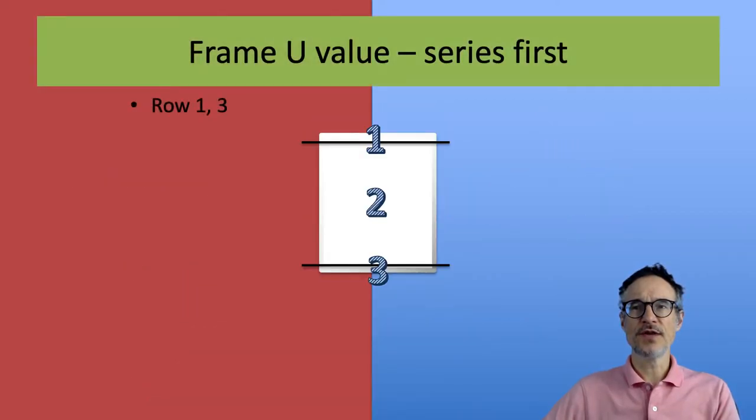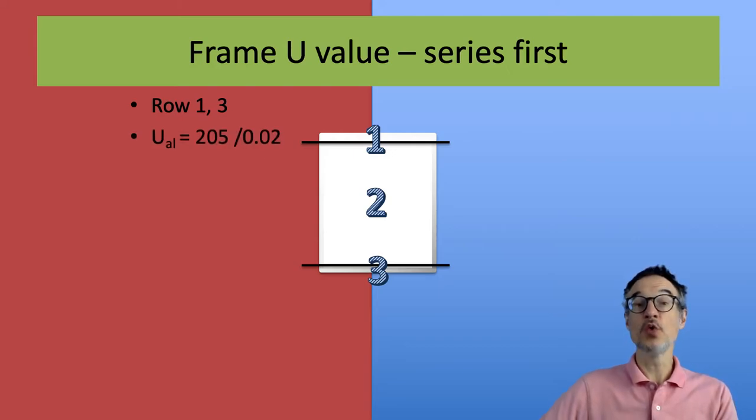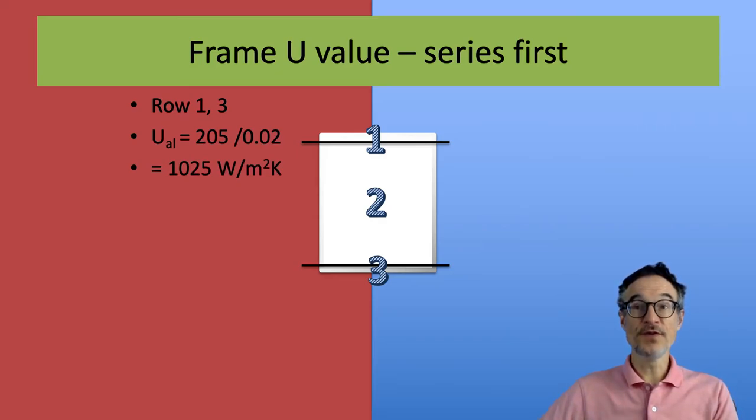And in this case, we can look at the rows, three rows: one, two, and three. Row one and three are the same, and we've got aluminum. We've got a thickness of aluminum, and we can work out the U value for those fairly easily.